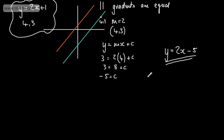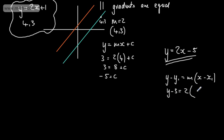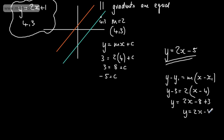We could also have used the formula y minus y1 equals m times (x minus x1). Using these values, we would have y minus 3 equals 2 times (x minus 4), which gives y equals 2x minus 8 plus 3, so y equals 2x minus 5 — the same result. It's entirely up to you which method you use.